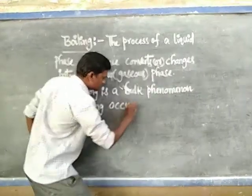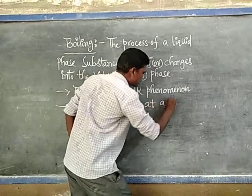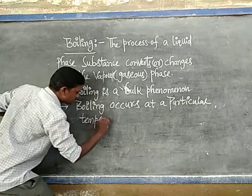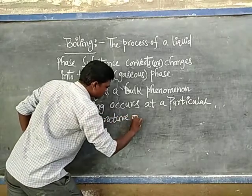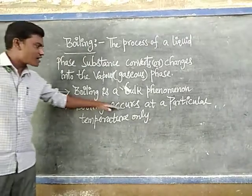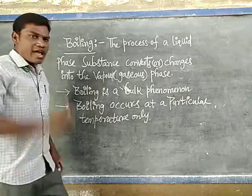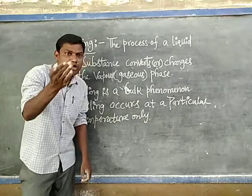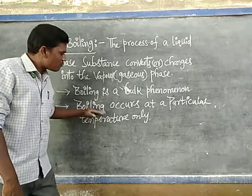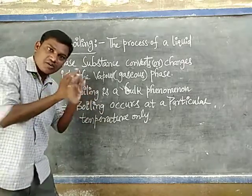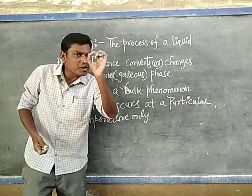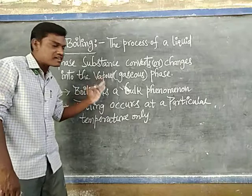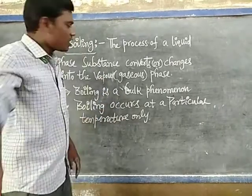Boiling occurs at a particular temperature only. This is also a very important point — boiling occurs at a particular temperature only. You will understand this topic easily with the help of a suitable experiment. Before going to the experiment, what is the boiling point of water?